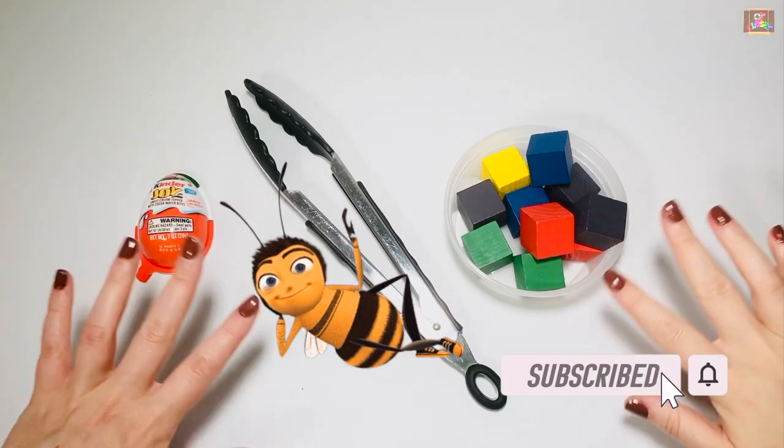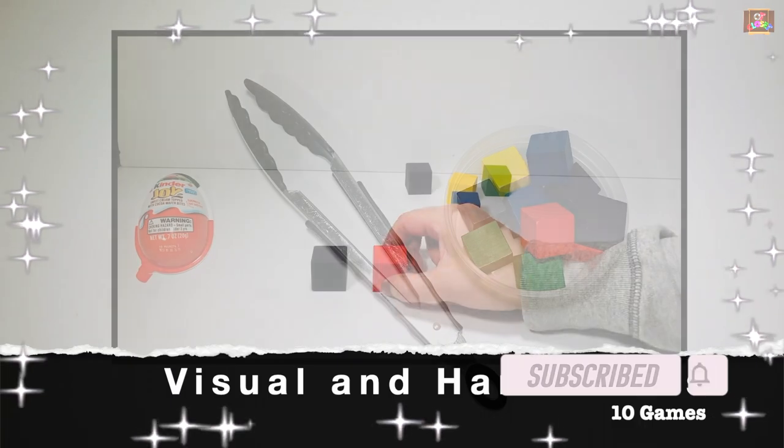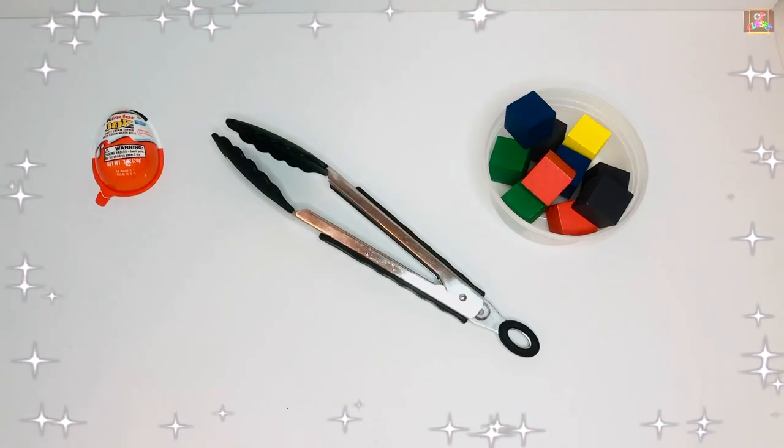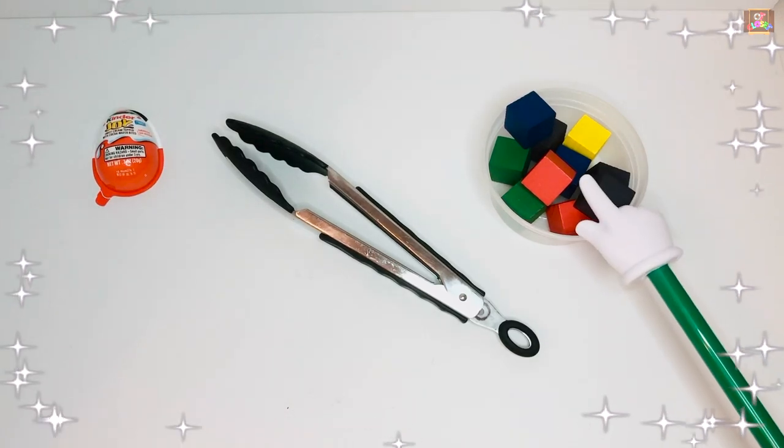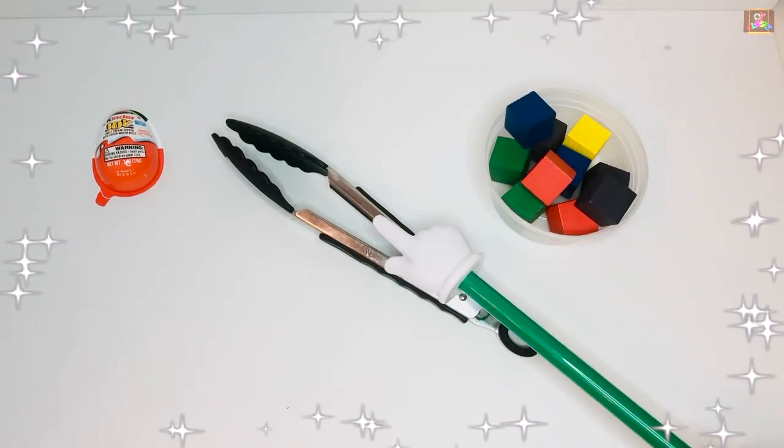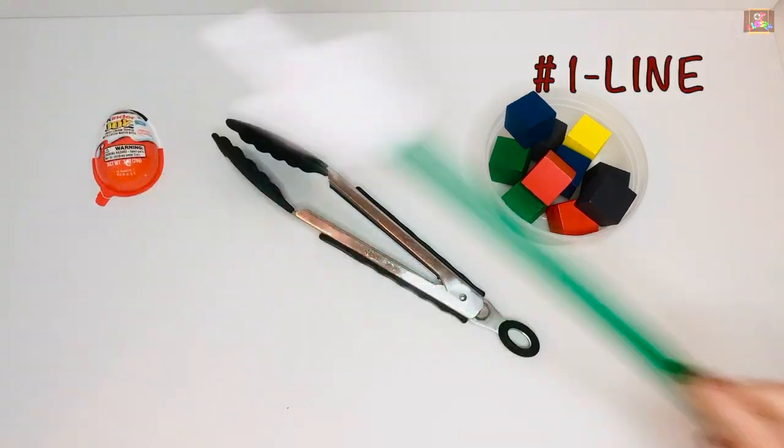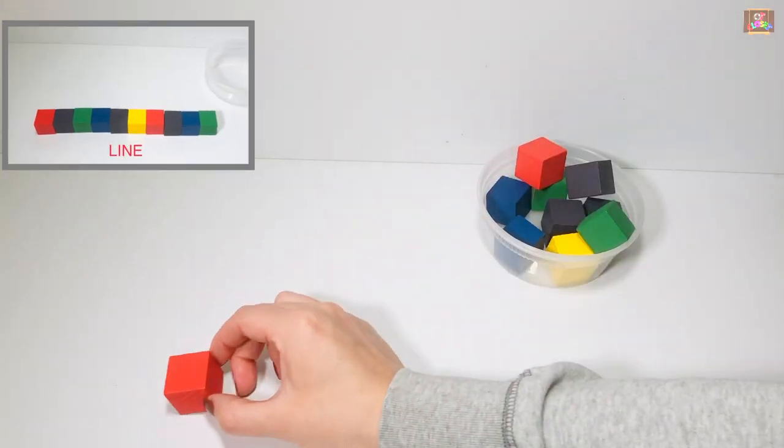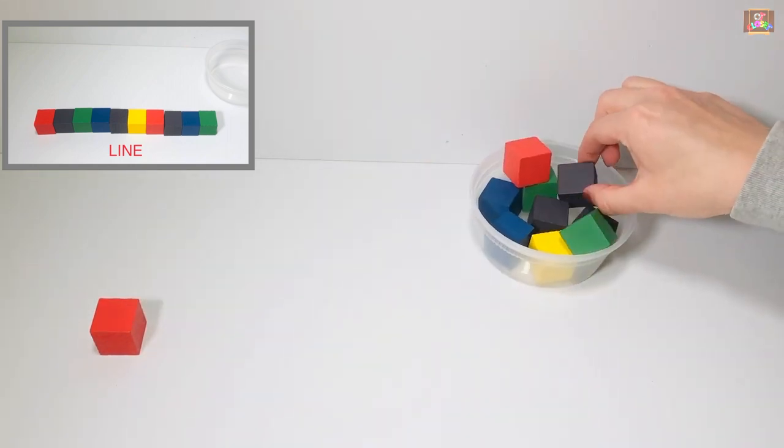Hi my busy bumblebees, this is Miss Olga, occupational therapist. Let's play 10 building games using blocks. You need to get 10 blocks and tongs. When we're done, we'll open the Kinder Egg. Game number one: pick up 10 blocks one at a time using two fingers and make a straight line.